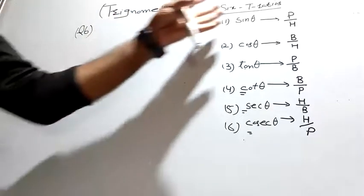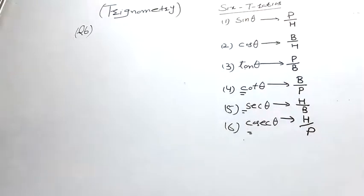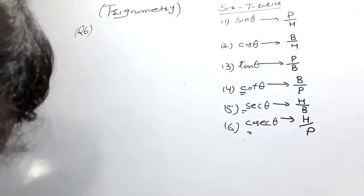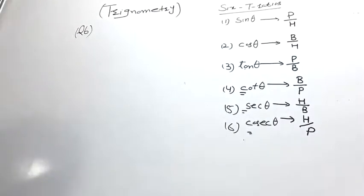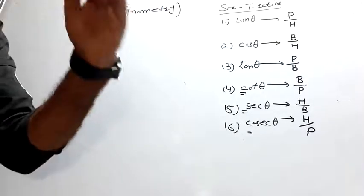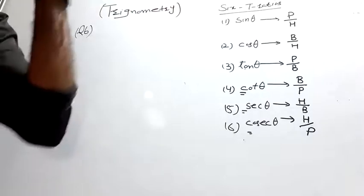These are also called circular functions. Now switching to question number six: the question states — if angle A and angle B are acute angles, and cos A is equal to cos B, show that angle A is equal to angle B.